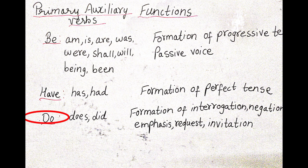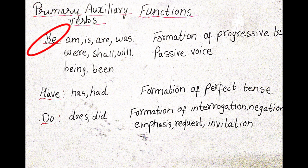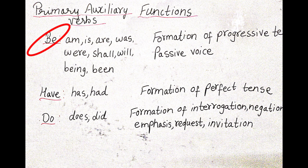Now what are the functions or what is the function of BE? Now BE is used in various forms. So it is formation of the progressive tense, that is passive voice. Now what do we mean by progressive? Progressive means it is ING or we can call it as continuous when the process is going on.